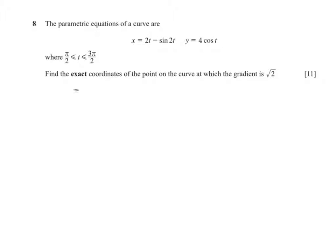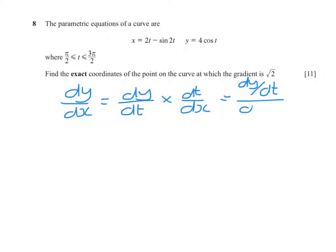The first thing to note from the chain rule is dy/dx equals dy/dt multiplied by dt/dx, or we can think of that as dy/dt divided by dx/dt. So if x equals 2t minus sine 2t...